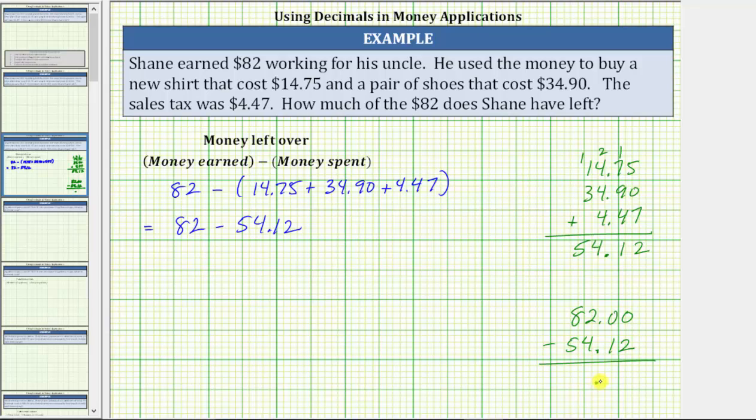Bring the decimal point down, and now we subtract like we normally do. Notice in the hundredths place value, we have zero minus two. We cannot subtract two from zero. We need to perform an exchange by going all the way to the two in the ones place value. We change a two to a one, which gives us nine tenths and ten hundredths. And now we can subtract. Ten minus two is eight. Nine minus one is eight.